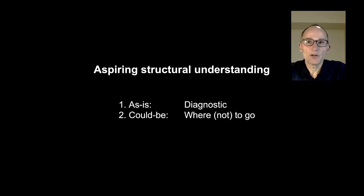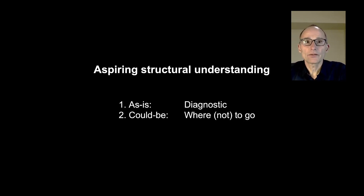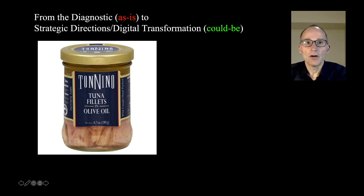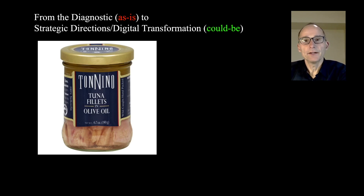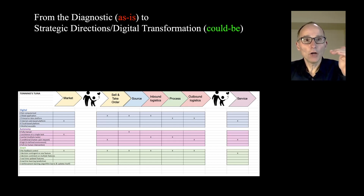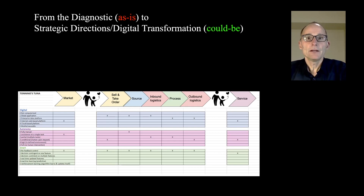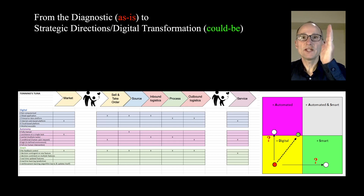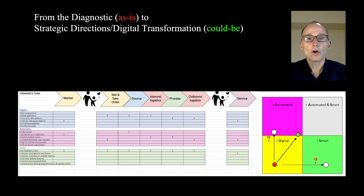So what can we do with this 2x2 matrix? First, we can use it as a diagnostic. Second, we can ask where we could go next — what strategic directions could we consider? For example, we've done a diagnostic of the company Tonino, which focuses on ethical fishing of tuna and is based in Costa Rica. We evaluated their level of digitization, automation, and smart algorithm use for each major process in their value chain. The next step is: do we increase automation, focus on smart decision support, or try to do both and move along the diagonal?